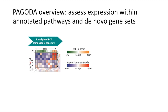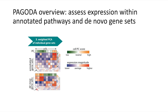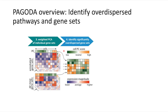Beyond testing a single pathway, we can test for all the pathways and gene sets within databases such as gene ontology. We can even augment existing databases with our own manually curated gene sets based on prior knowledge, and we will again summarize each provided pathway and gene set using weighted principal components. We can also derive de novo gene sets based on correlated expression patterns observed directly from the data, assuming that genes correlated in expression across the population of cells are likely functionally related as part of the same pathway or process. Not all pathways will capture underlying biological variability, so given all these weighted principal components, we want to focus on the pathways and gene sets that exhibit more variability than expected — that is, they are over-dispersed.